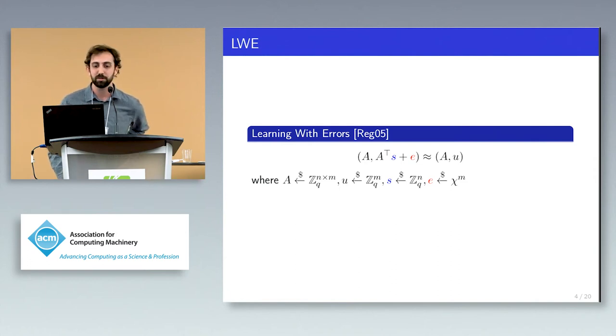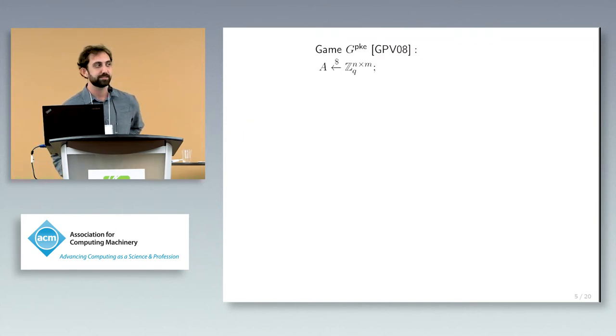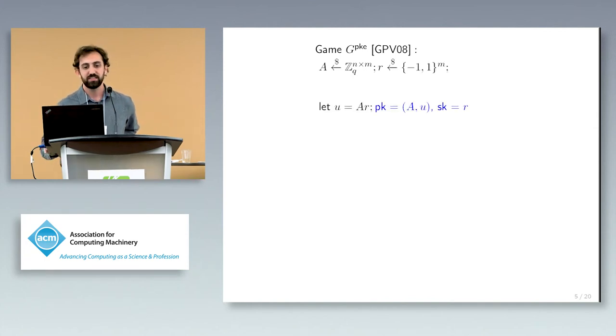To see how we will verify security proofs which use this assumption, first let's look at the dual Regev PKE scheme from 2008. To generate the public and secret keys, we first sample a uniform matrix A and a uniform bit vector R, and then set the public key to be the pair A comma AR, which we call U, and the secret key to be this vector R. The message space of the scheme is single bits.